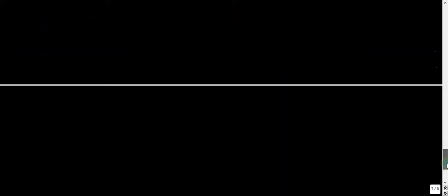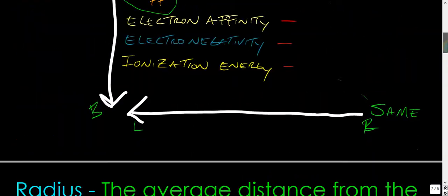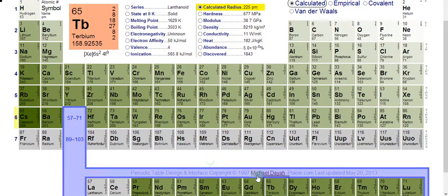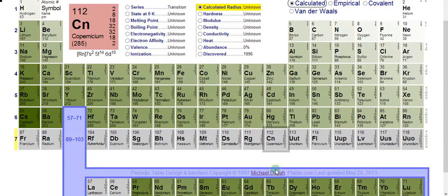And basically, I have one more thing I want to show you that kind of solidifies all of this here. If you can understand all this stuff and grasp this concept, you've pretty much got 50 to 70 percent of an exam two on a chemistry one college course. There's an awesome website called ptables.com, and I want to give credit to Michael Daya. This is an amazing website.